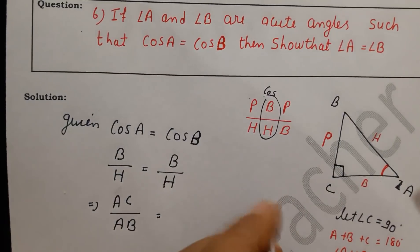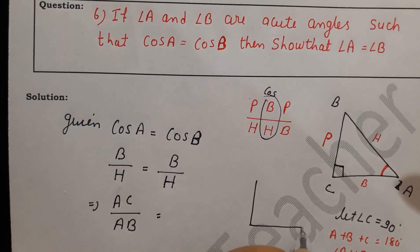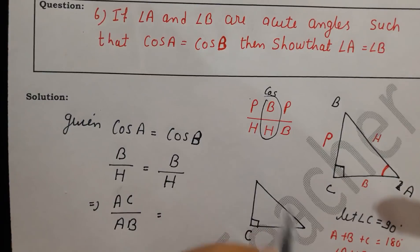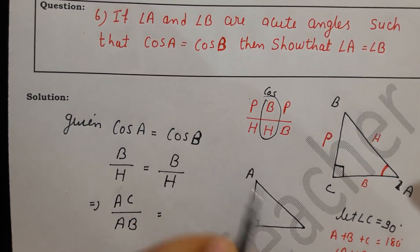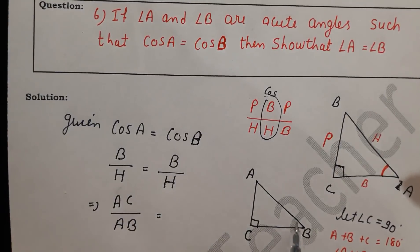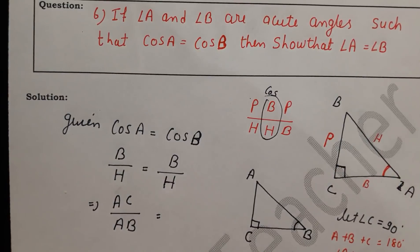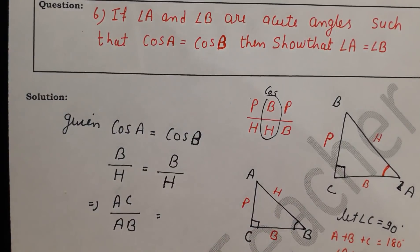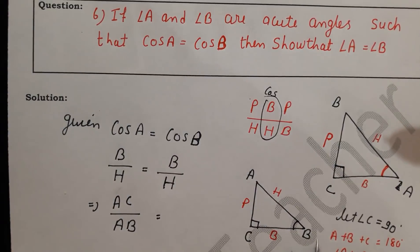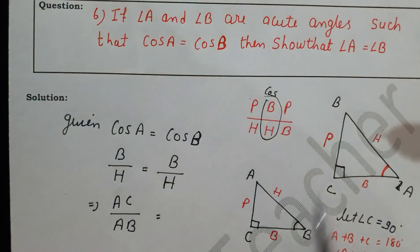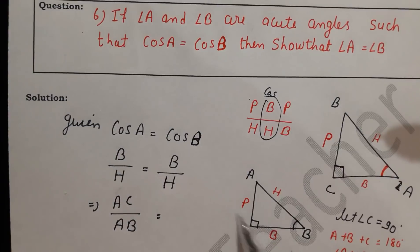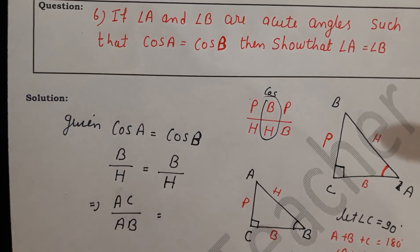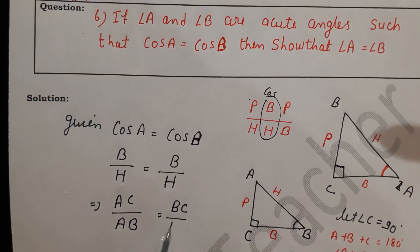Now for cos B, let's draw one more triangle, or we can relabel the same triangle. The right angle C remains the same. For angle B, the base is BC and the hypotenuse is AB. The hypotenuse does not change — only the base and perpendicular change depending on which acute angle we consider. So cos B equals BC over AB.